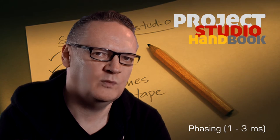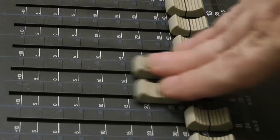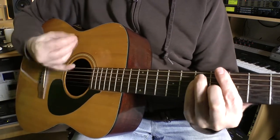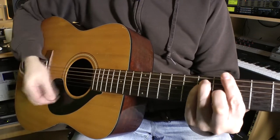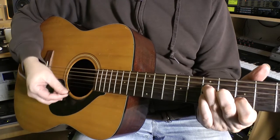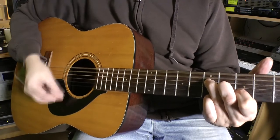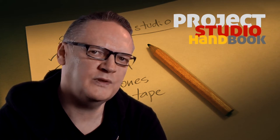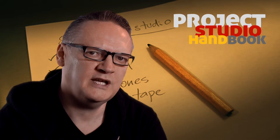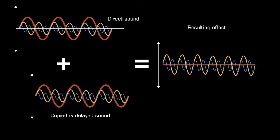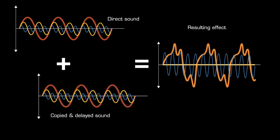At the shortest delay times of between 1 and 3 milliseconds, and when the delay is heard alongside the source signal, an effect known as phasing may be created. By using modulation to vary the delay time, complex phase differences between the source and copied signals are created. Because these delay times fall within the length of time associated with individual waveform harmonics, various cancellation and summing effects can be heard between the two sounds. These are more phase-related effects than straightforward repeats, and the effect is sometimes referred to as comb filtering.